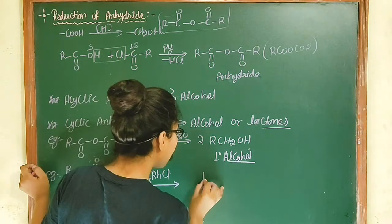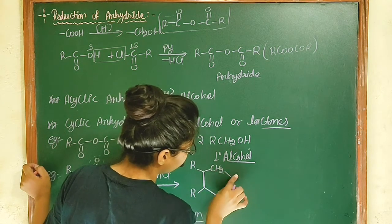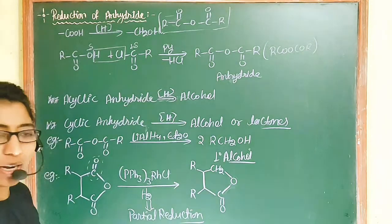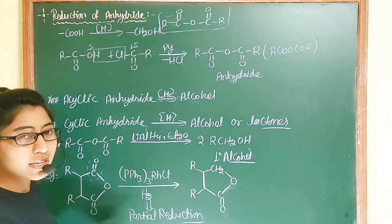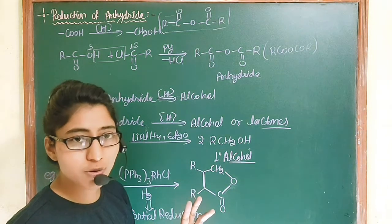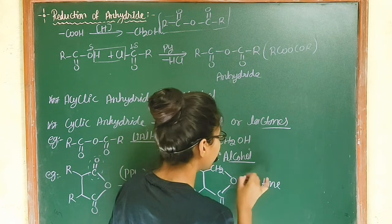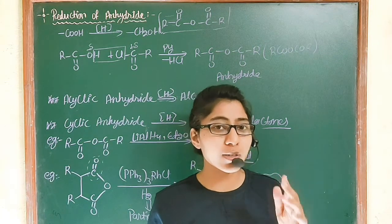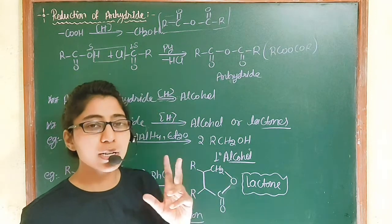Wilkinson catalyst favors partial reduction of cyclic anhydride and gives lactones. What are lactones? Cyclic esters are called lactones. So cyclic anhydride gives a lactone under Wilkinson catalyst reduction. There is partial reduction to lactone when you use Wilkinson catalyst.